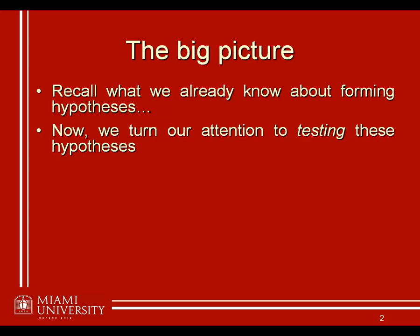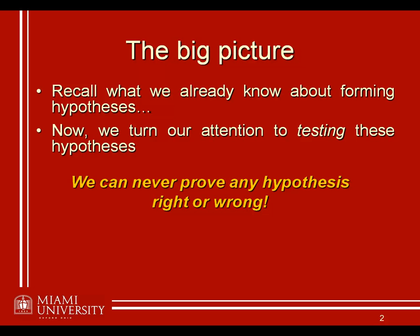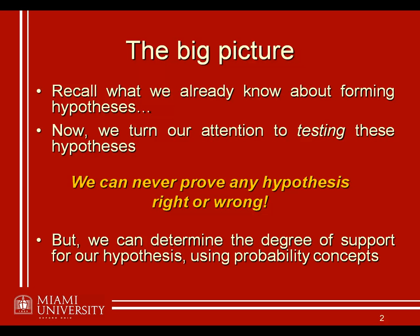When we talk about testing hypotheses, one thing you need to be very careful about is to never say that you can prove any hypothesis right or wrong. I don't ever want to see you writing that the data proves our hypothesis, or that previous research has shown such and such and therefore it proves the theory. We can never prove any hypothesis or any theory right or wrong — and that's a pet peeve of mine, so make sure that word never shows up in any of your writing this semester or next. What we can do is simply determine whether or not one hypothesis is more likely than another, and talk about the degree of support for a specific hypothesis being true or not.